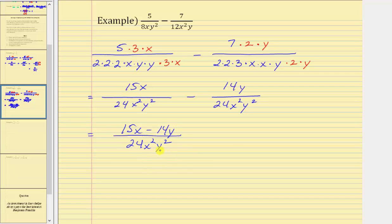Notice that if x or y was equal to zero, we would have division by zero. So let's make a note here: x can't equal zero, or y can't equal zero.